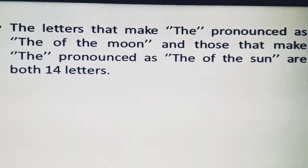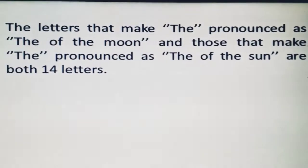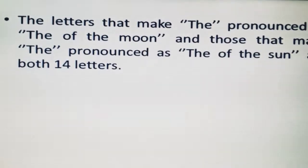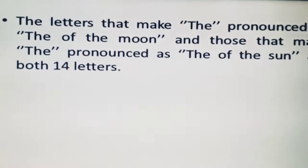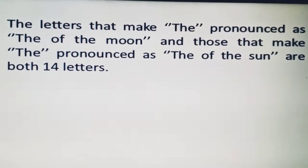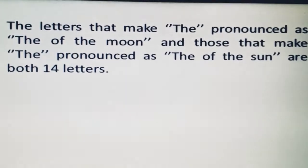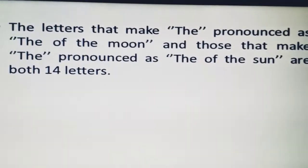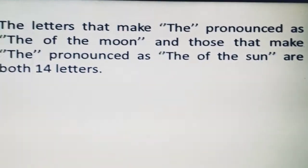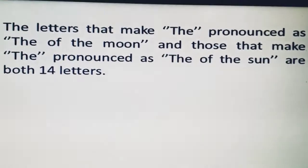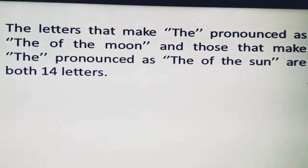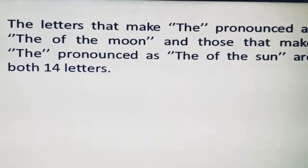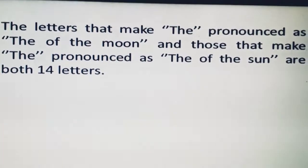To summarize: there are cases where we pronounce Al as Al-Qamariyya (the moon) and cases where we pronounce it as Al-Shamsiyya (the sun). Both groups have 14 letters each. The Arabic alphabet is divided into two parts: 14 letters trigger the moon pronunciation and 14 letters trigger the sun pronunciation, depending on which letter begins the noun.